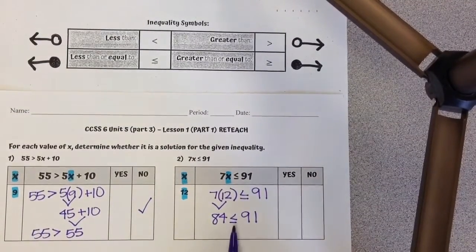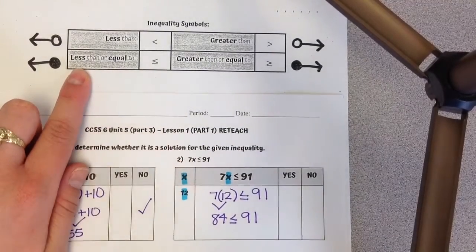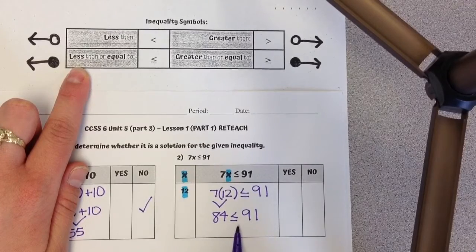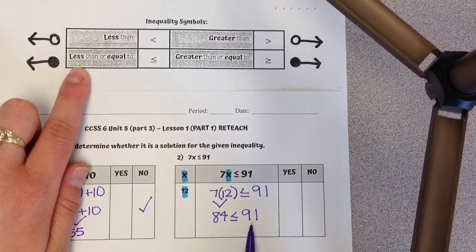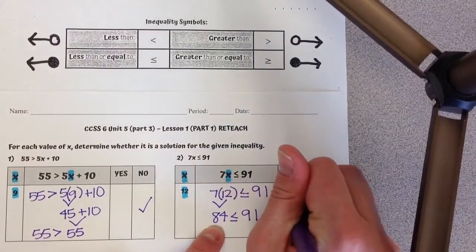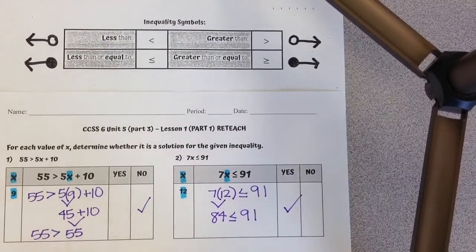Again, if you're confused what this symbol is, you can look up here. So I'm going to read this in a sentence and see if it makes sense. 84 is less than or equal to 91. Yes, 84 is less than, so 12 is a possible solution.